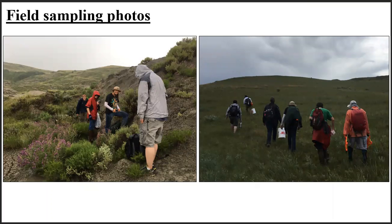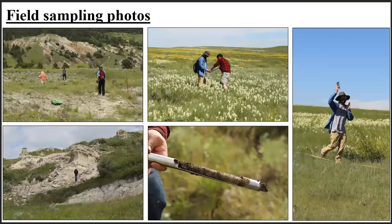On my first day of fieldwork, we got caught in a thunderstorm and had to take shelter in a very muddy canyon. That's me in the red raincoat at the approximate moment when I realized I was not cut out to be a field biologist. Fortunately, the other field days went more smoothly than the first. We spent the better part of the summers of 2019 and 2020 collecting soil samples, measuring the amount of bare ground at each site, and taking inventories of plants found at each site. The picture at the bottom is of a soil sample taken from one of the sites.